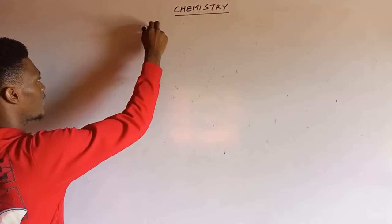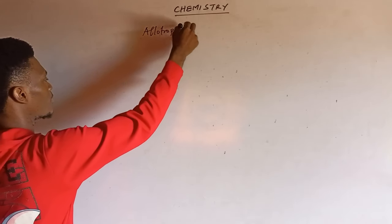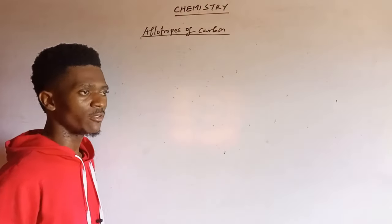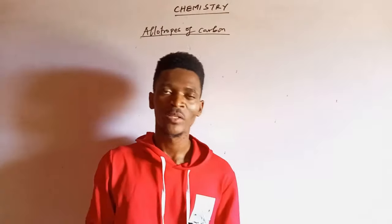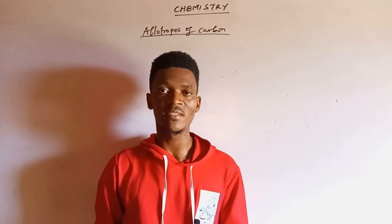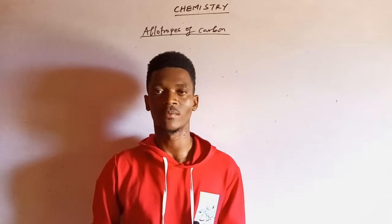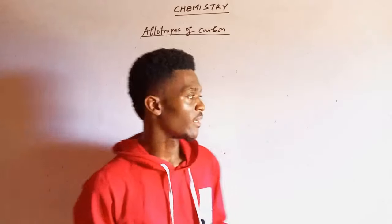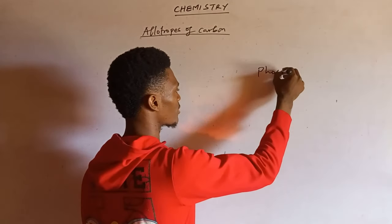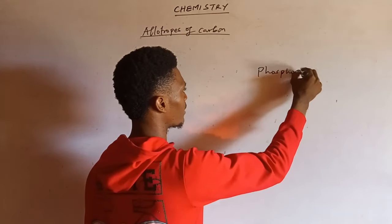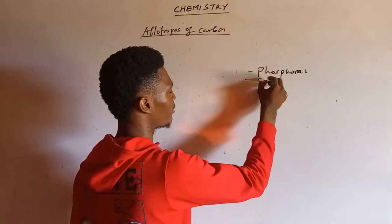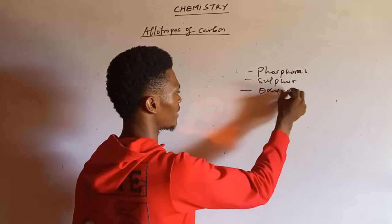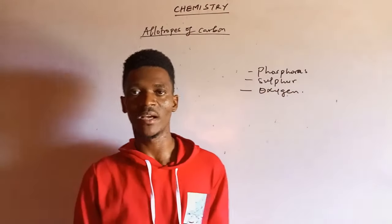Let's consider the allotropes of carbon. Allotropy is simply a phenomenon in which an element exists in various forms but having the same physical state. It's not only carbon that exhibits allotropy — we still have other elements such as phosphorus, sulfur, and oxygen, amongst others. So these are known elements with allotropy.